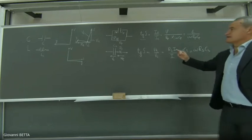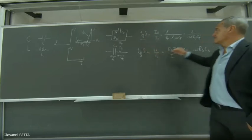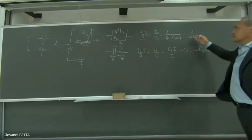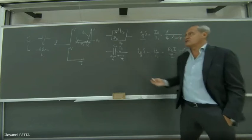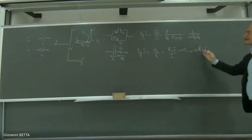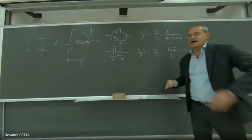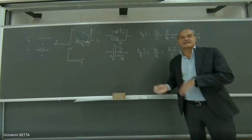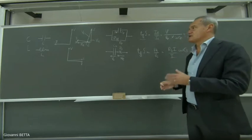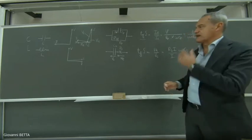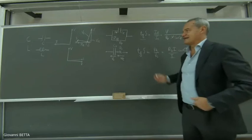Tenete presente che, essendo tan(δ) uguale nei due casi perché sono due modelli dello stesso dispositivo, uguagliando le due relazioni riesco a trovare i legami fra R_S, R_P, C_S, C_P, quindi posso passare senza problemi da un modello equivalente all'altro.